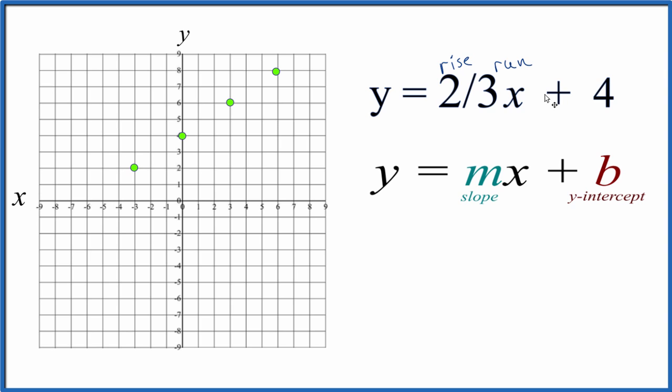For y equals two-thirds x plus four, let's put a line through that. Then we could put arrows to show that it goes to infinity. That is the graph for y equals two-thirds x plus four.